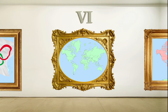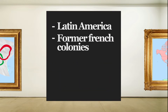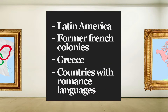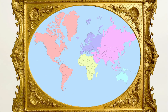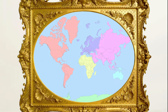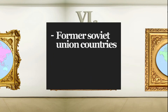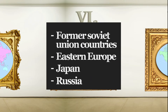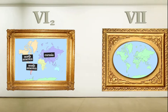The 6-continent model comes in two variants. The first is the one used in Latin America, former French colonies, Greece and countries with Romance languages. It's just like the 5-continent model, but with the addition of Antarctica. The other one is mainly used in former Soviet Union countries, Eastern Europe, Japan and Russia. In this one, America gets separated, but Asia and Europe merge into the supercontinent Eurasia.